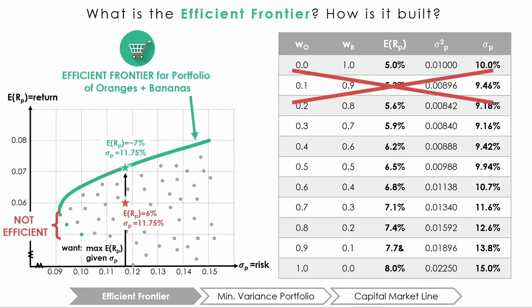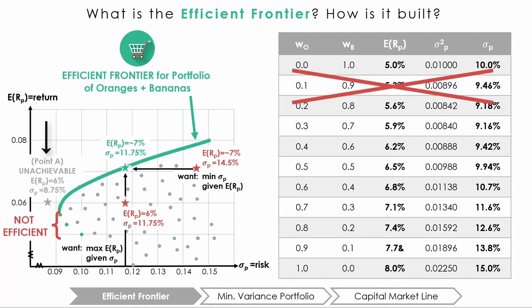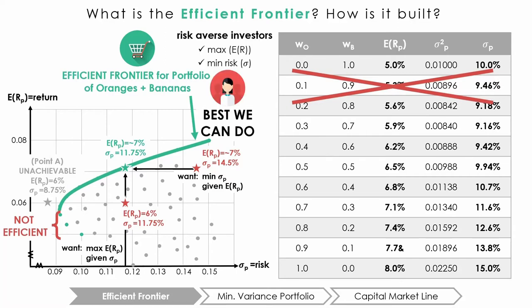In other words, if an investor has to endure a higher risk of 11.75%, then she would expect to be rewarded with the highest return possible, which is 7%. Or if the investor wishes to earn a return of 7%, she would choose a portfolio that earned that return at the lowest possible risk, which is 11.75%. Since we have included all combinations of all risky assets possible when creating our portfolios, point A — for example — is unachievable because there are no risky assets or combination of risky assets that can give a 6% return for an 8.75% risk. The best portfolio we can achieve as a risk-averse investor is a portfolio on the efficient frontier.